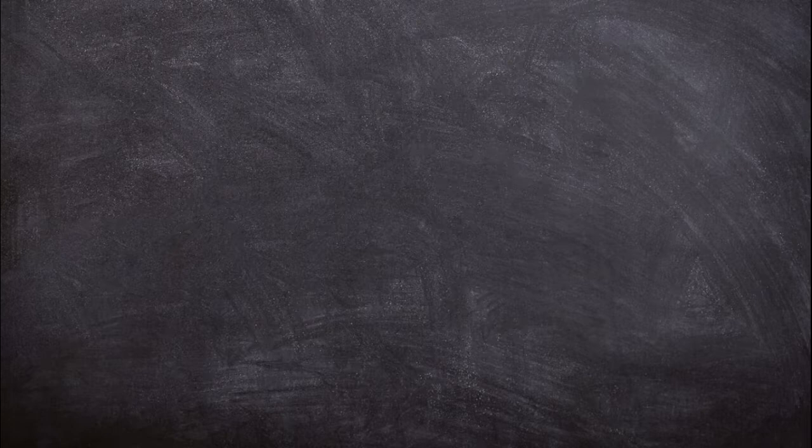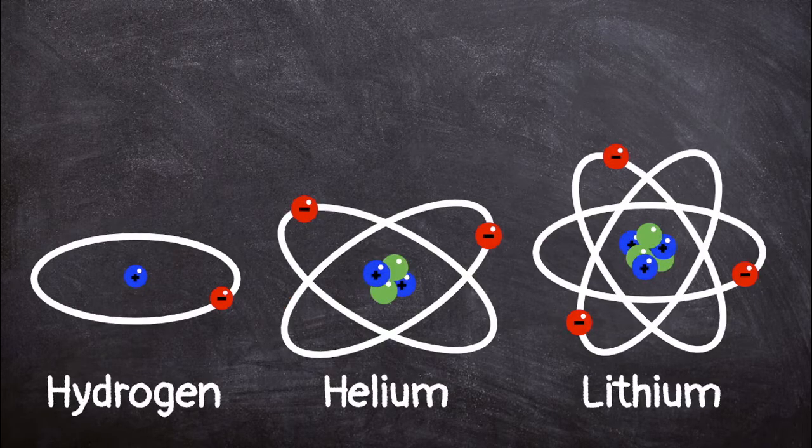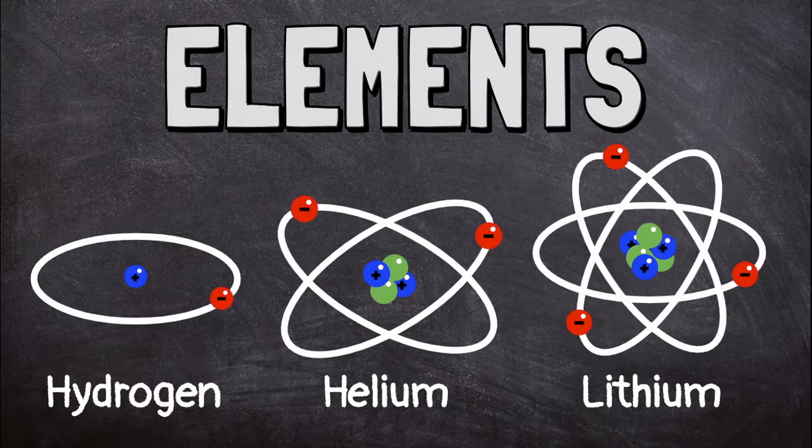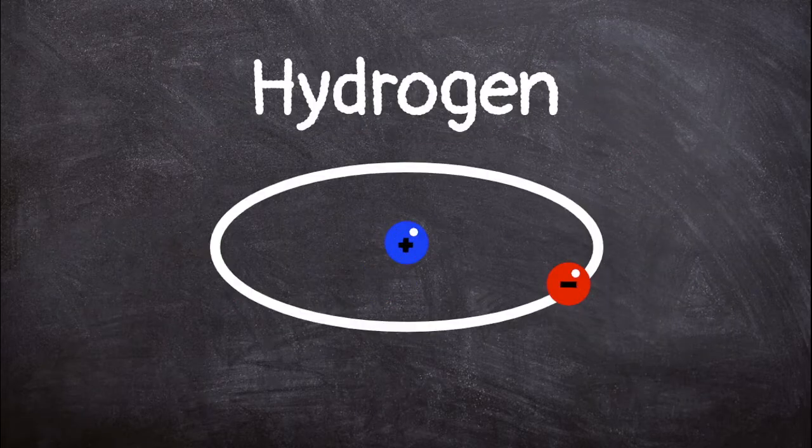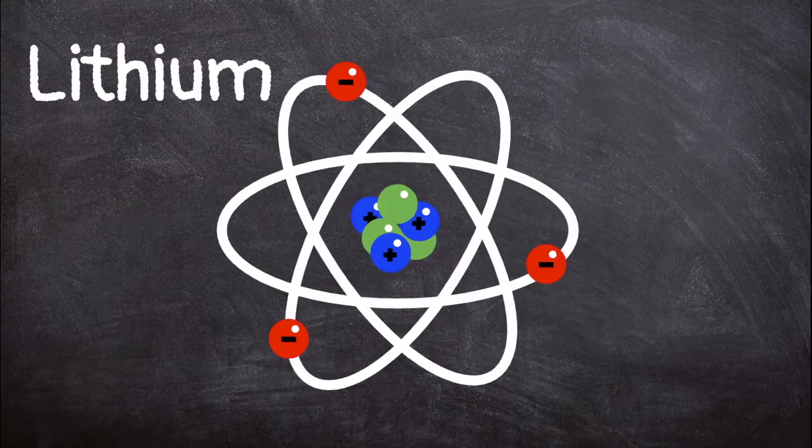There are many different kinds of atoms. Each different kind is called an element. Atoms are all sorted based on the number of protons they have in their nucleus. For example, an atom with only one proton is the element hydrogen. A helium atom has two protons. The atom lithium, pictured here, has three protons in its nucleus.